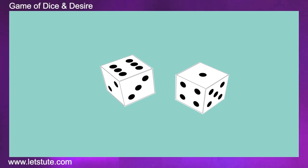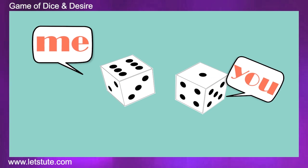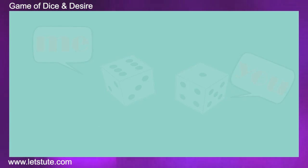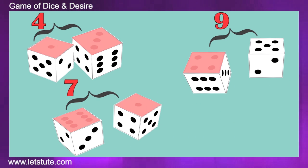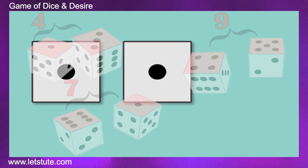Alright. We have two dice. One is with me and the another one is with you. We roll the dice simultaneously and then add the numbers coming on the uppermost faces of both the dice.